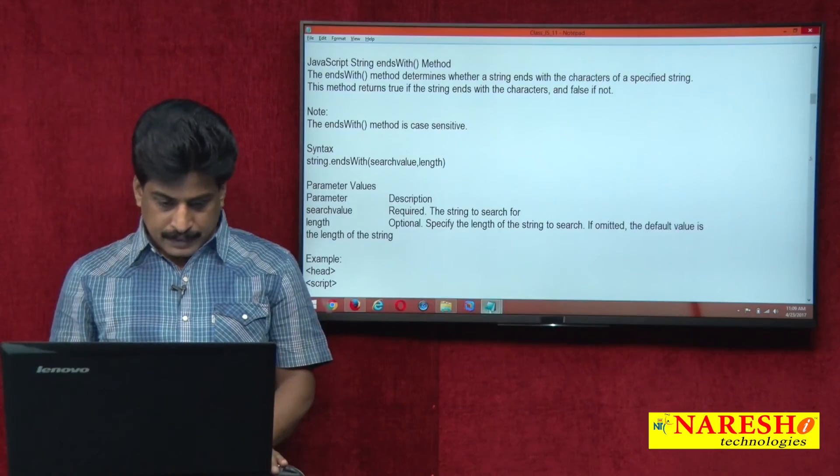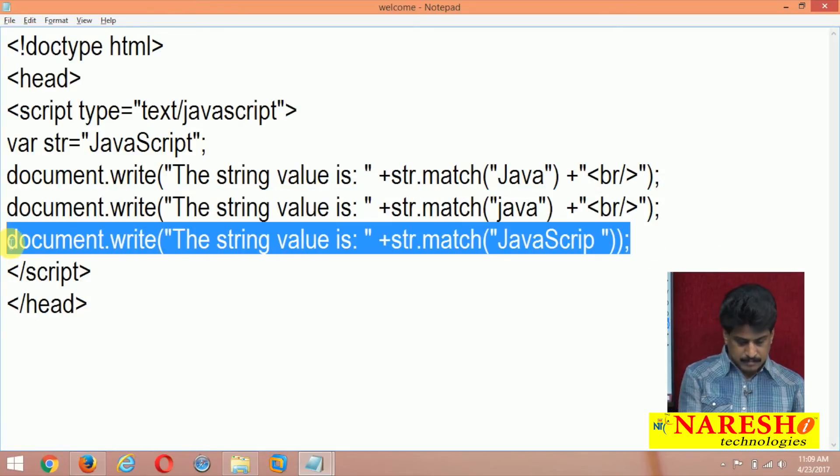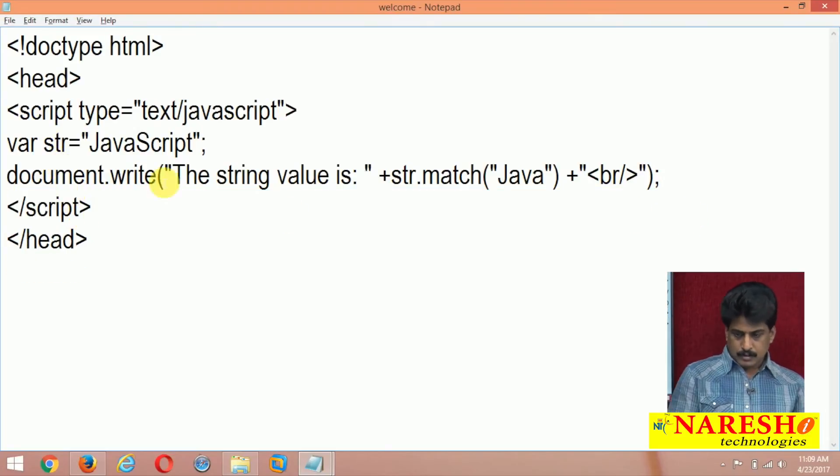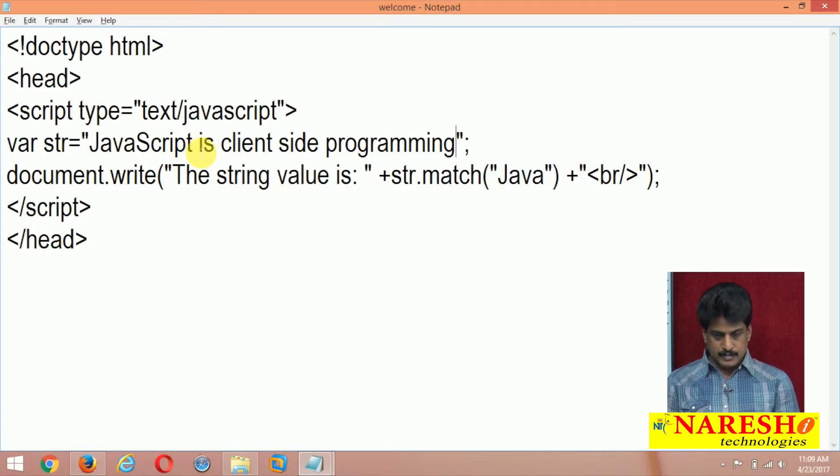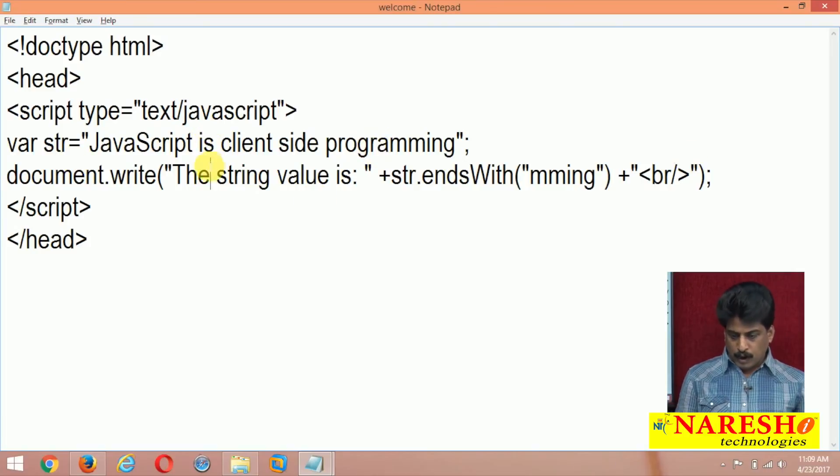Now we can go to practical implementation. document.write, I am removing the last statement. document.write, remove that. JavaScript is client side. JavaScript is client side programming. That is my string. Now string value is string dot endsWith, I am writing programming, mming, that's all, mming.